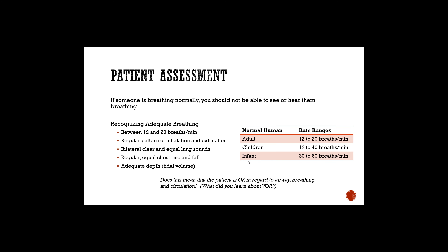Here's a table you need to know for the field, quizzes, and your exam. An adult is 12 to 20 breaths per minute, a child is 12 to 40, and an infant is 30 to 60. A memory trick: adult and child both start at 12 on the lower end. So just remember 12-20 for adult, 12-40 for child, 30-60 for infant. You may face a scenario on your exam where an infant has respirations of 44 — you need to know 30 to 60 is normal.